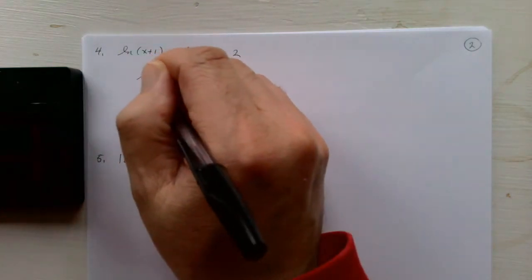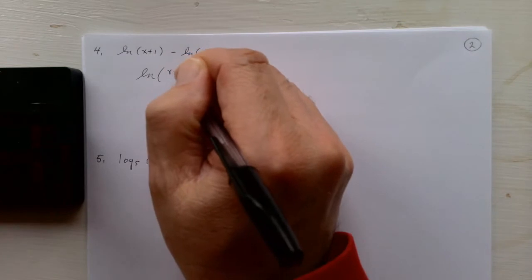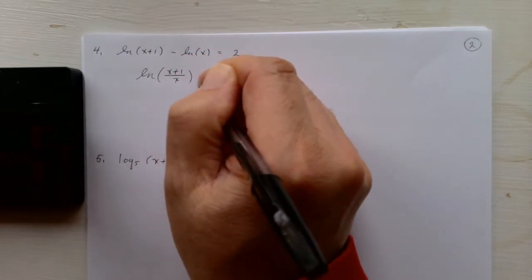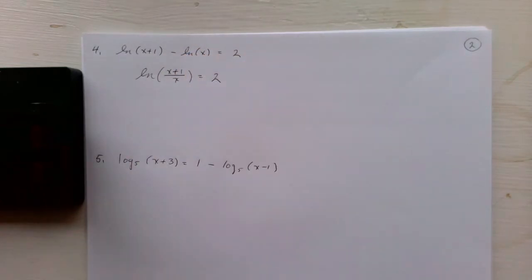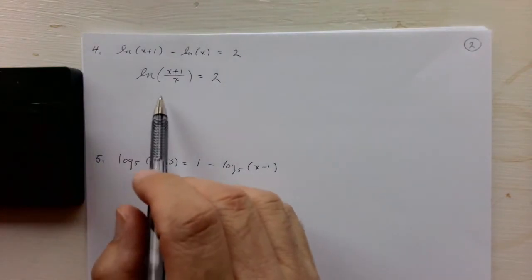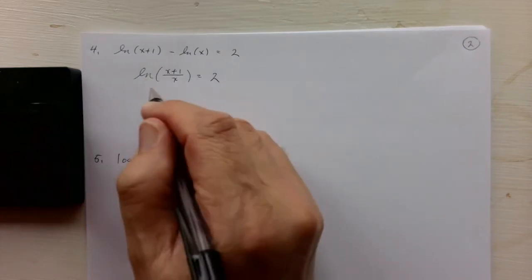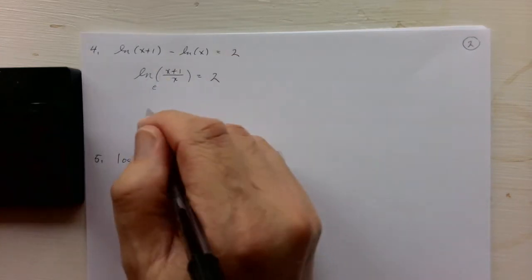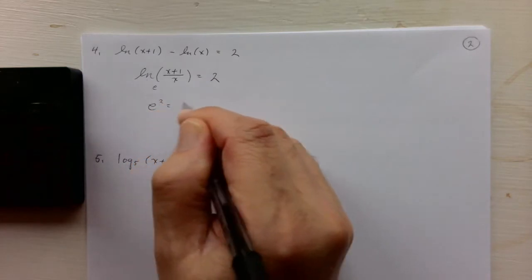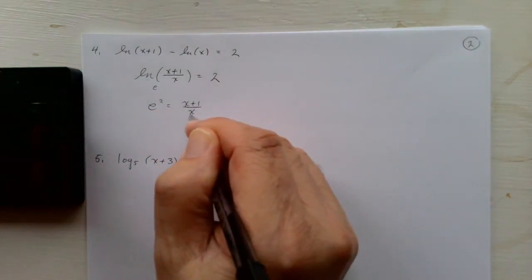We can write this as the log of the quotient. And now we can write this in its exponential form. The ln means the base is e, so this says that e squared is equal to x plus 1 over x.